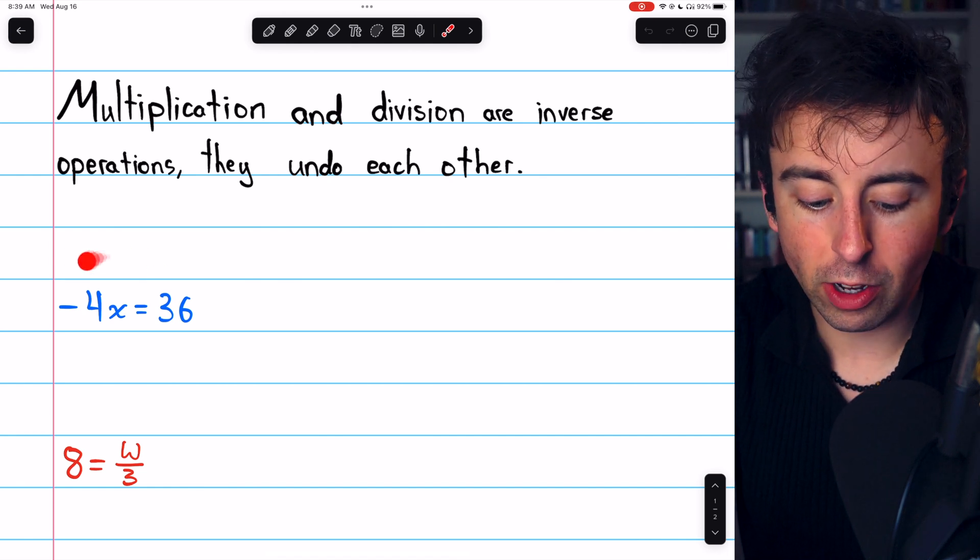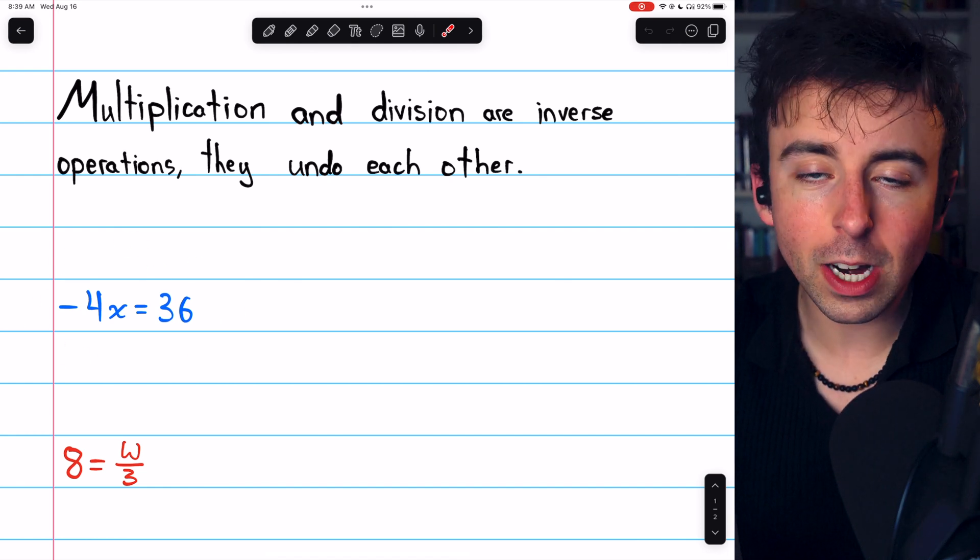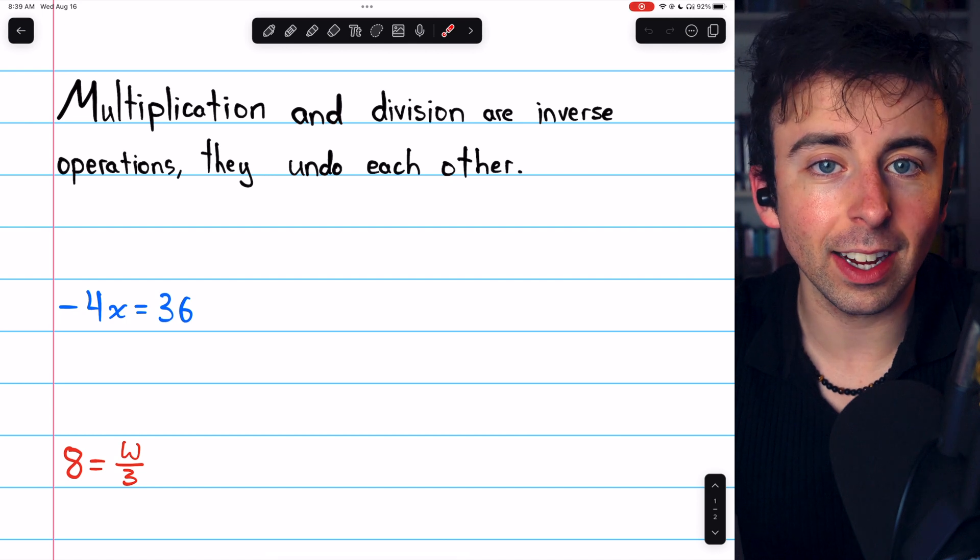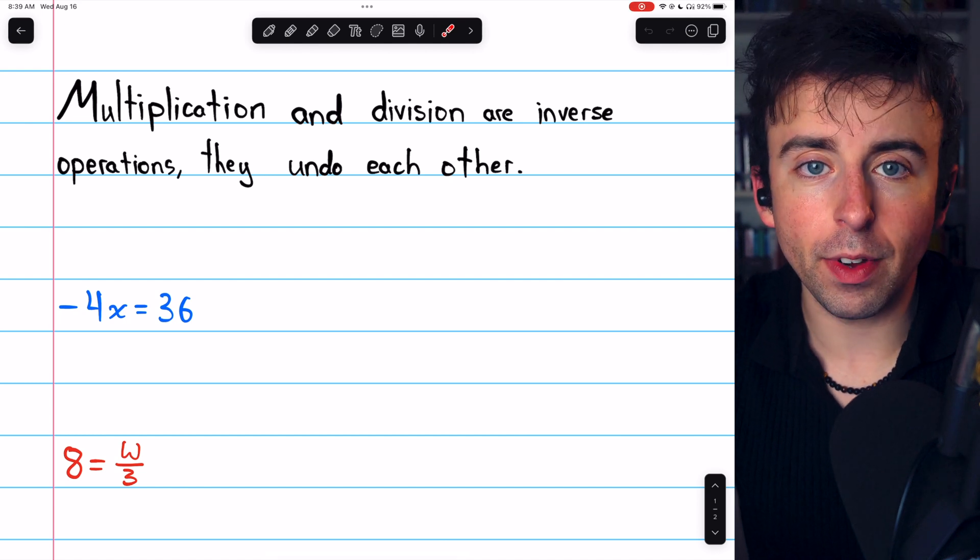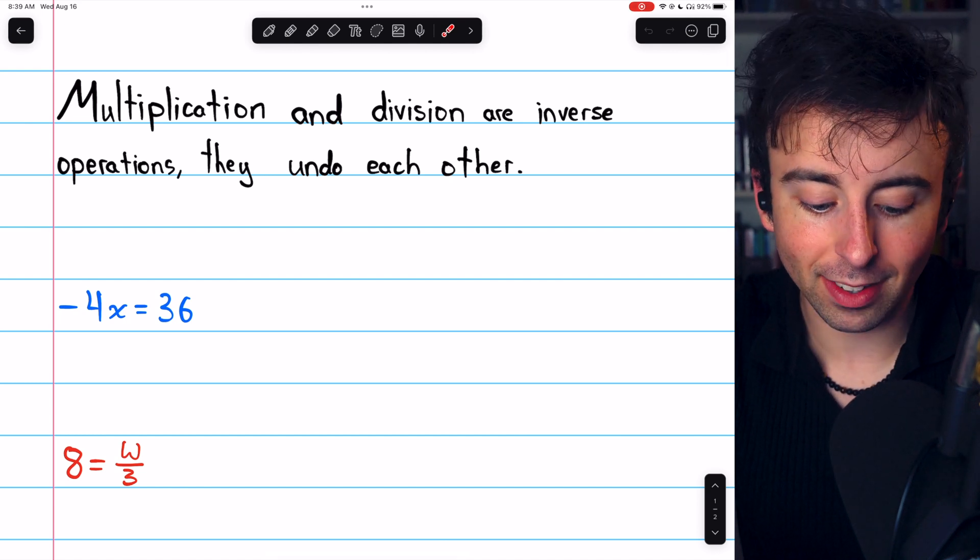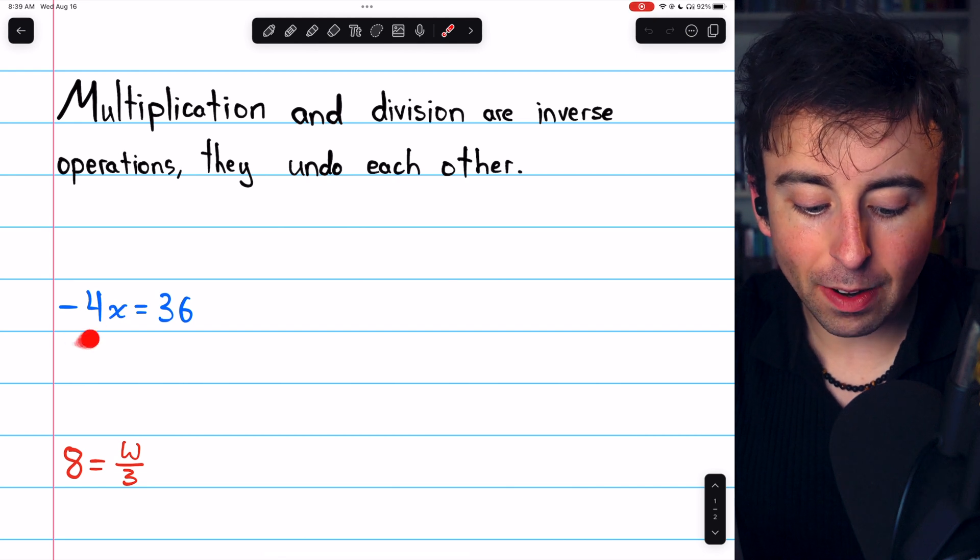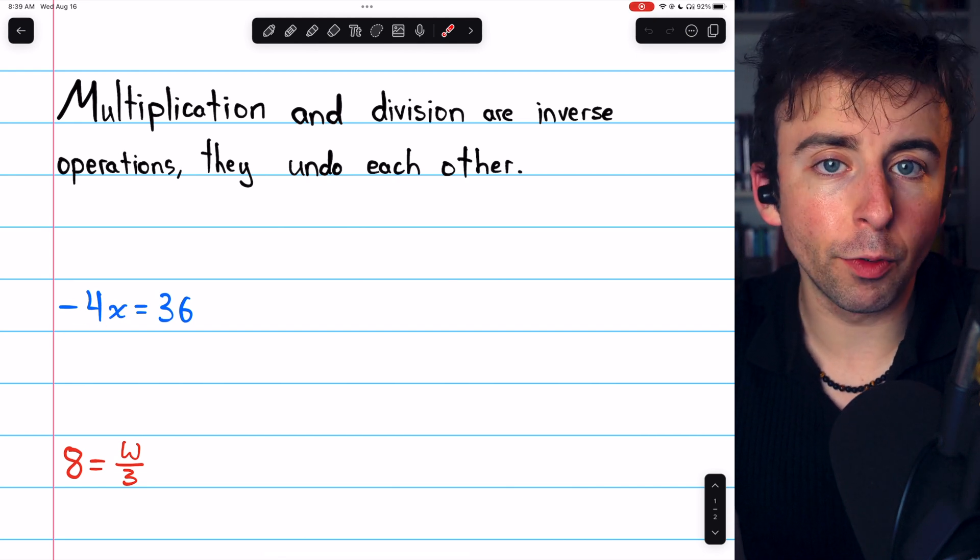For example, in this first equation, we have negative 4x equals 36. We want to solve for the variable to get x by itself. Right now, it's getting multiplied by negative 4.